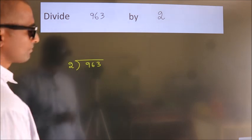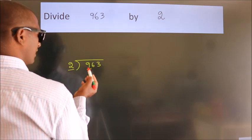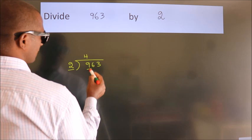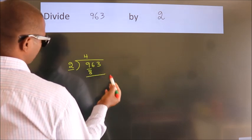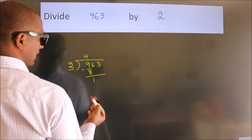Next, here we have 9, here 2. A number close to 9 in the 2 table is 2 times 4 equals 8. Now we should subtract, we get 1.